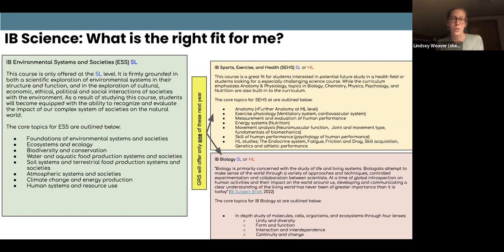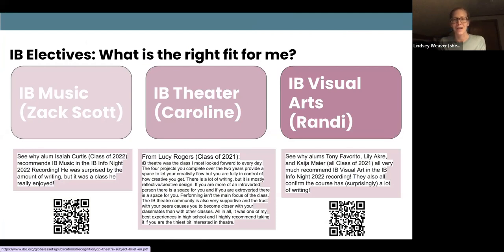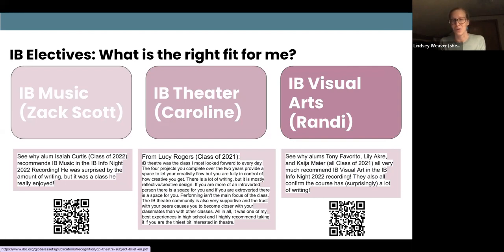IB electives in more detail: IB theater does have a performance component, but most of it focuses on all the things that go into making a production — the lighting, staging, history, techniques, scripts, and writing. Students rave about how much fun they have in IB theater. It tends to be a close, tight-knit group, which is great for building community and being part of something. IB music has many fun elements too — you get to play with making music, use technology to create music, and delve into music theory. That course is with Zach Scott, who also runs our musicianship course.